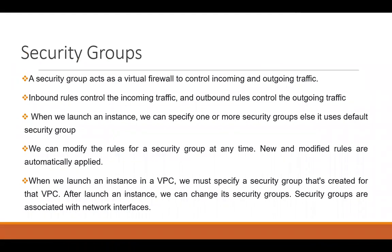Security groups act as a virtual firewall to control the incoming and outgoing traffic from our EC2 instances. In the inbound rules, we define what kind of incoming traffic will be allowed, and in the outbound rules, we control the outgoing traffic from our EC2 instance. Whenever we launch an instance, we can specify one or more security groups, or it will use a default security group that comes under the launch wizard.